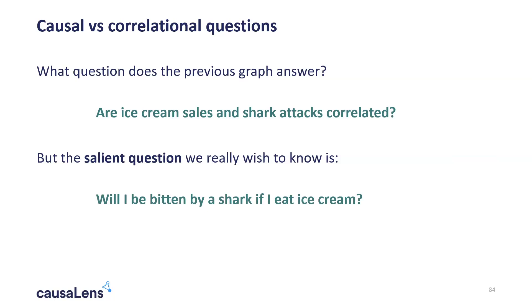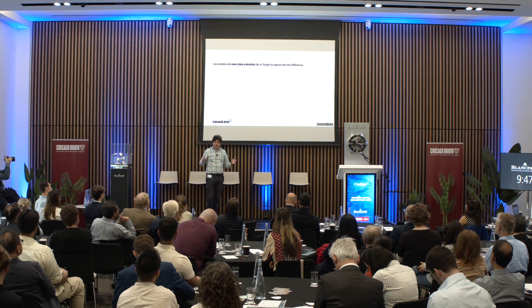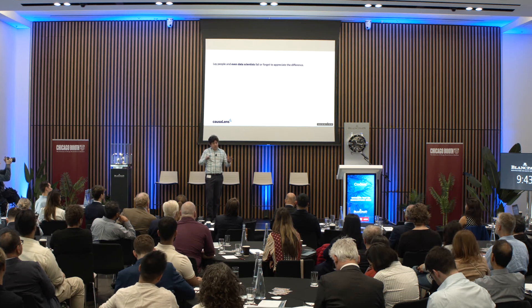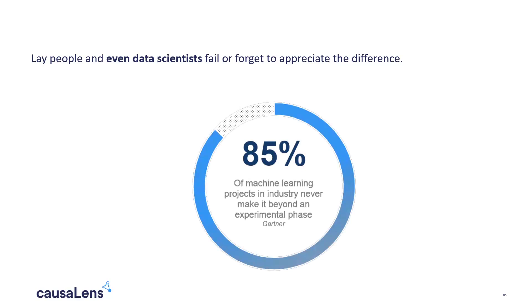What went wrong between the pattern we observed and the question we're asking, and how do we actually answer the right question? This challenge happens all throughout society — we mistake correlation and causation everywhere. Even data scientists who build machine learning models make this mistake, and this has led to many real-world projects being unsuccessful, partly because they tried to answer the wrong question or didn't formulate the question correctly.